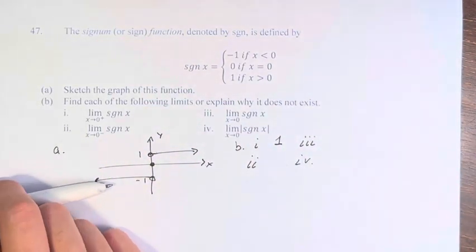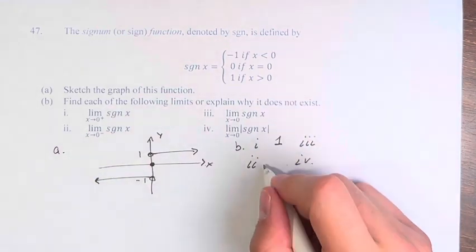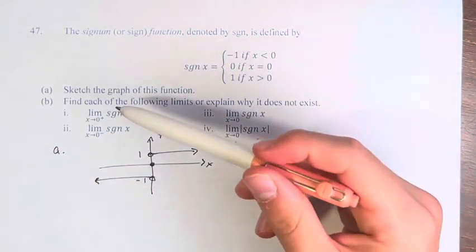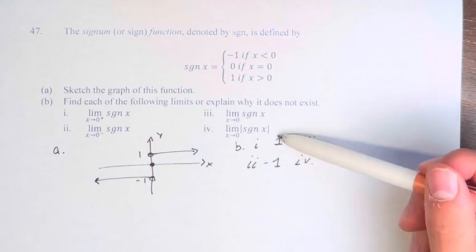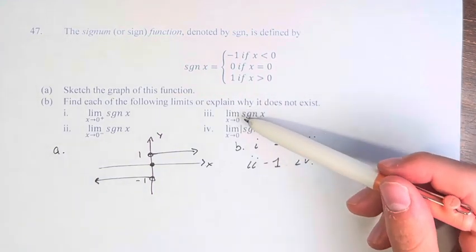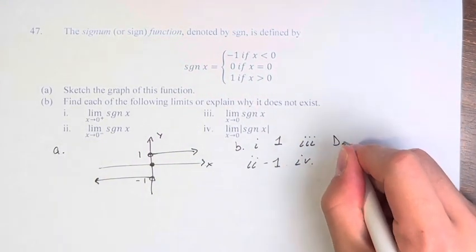Meanwhile if we're approaching from the left, we're approaching from a value of negative 1. Since the limit from the left and the right do not equal each other because 1 doesn't equal negative 1, the limit as x approaches 0 in general does not exist.